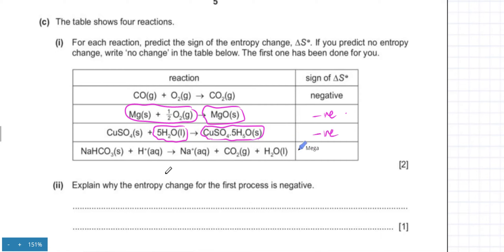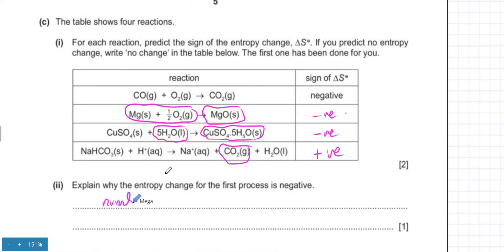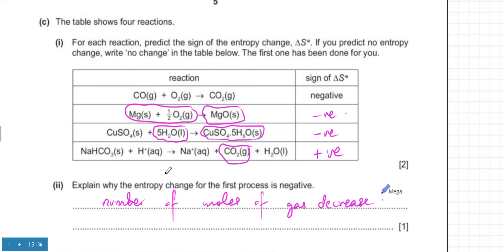For the last reaction, a gas is forming, so there is obviously more disorder — that's positive. Disorder is increasing. For the first process, explaining why the entropy change is negative: the number of moles of gas decreases. You have two molecules initially but now just one molecule.